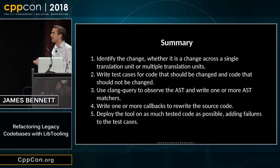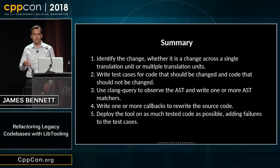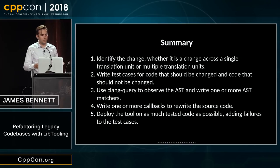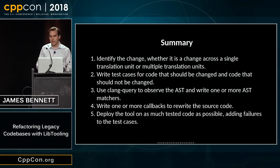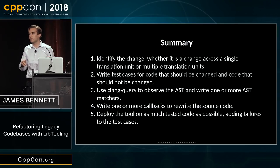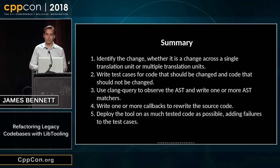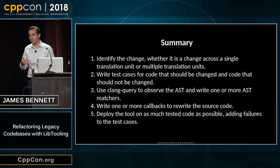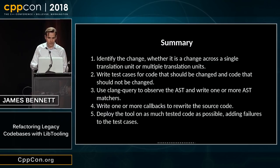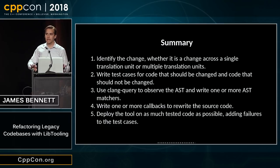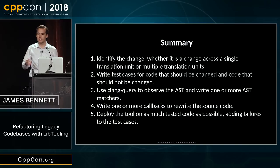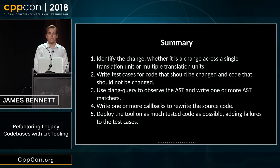To summarize how I typically write these tools: first I identify the change and the scope, which really affects the design of the tool. Then I write simple cases and use Clang Query to study those cases and see what information I can extract about the AST. Then I write my callbacks and try to run this on as much code as I can to find edge cases I didn't anticipate, and incorporate those into my test cases. That wraps up my talk.